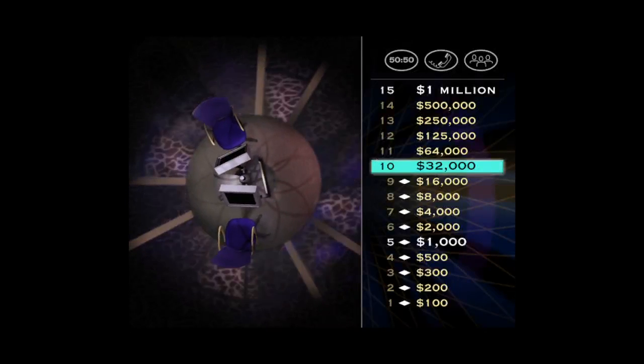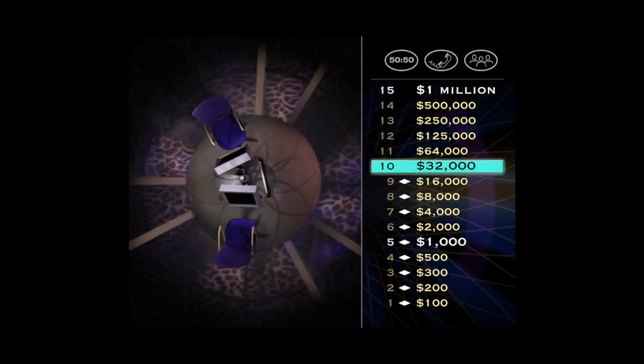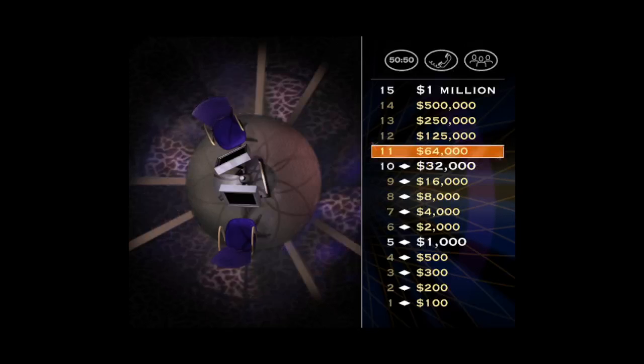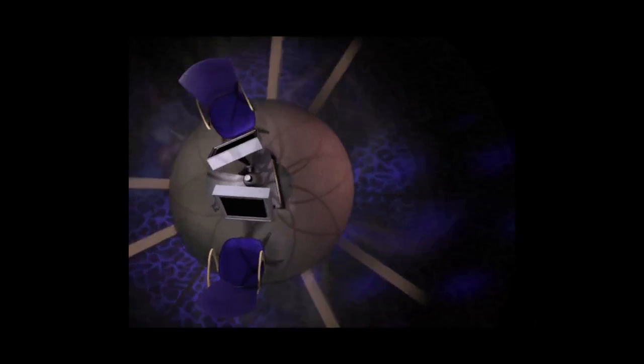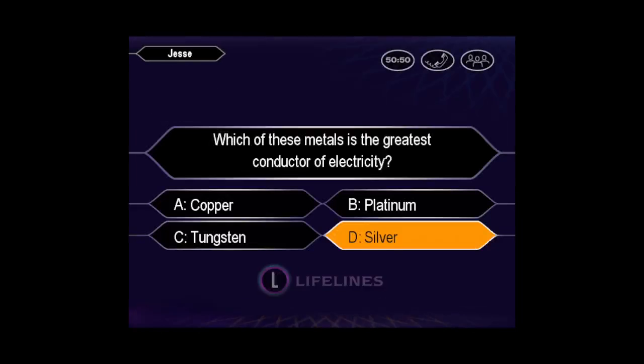Excellent. That's 10 in a row and $32,000. And you've hit another safe haven, so you can't lose your current winnings. Now let's take a look at your $64,000 question. Would you like to make that your final answer? D it is. You've got it.